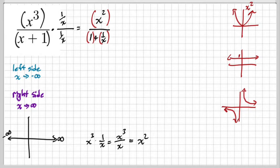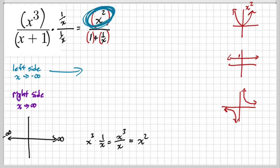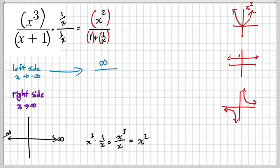Now that you know what the left and right sides are approaching for each of these, you can make predictions. We're going to plug in negative infinity — that's weird because negative infinity is not a number, it's a concept. Think of 'left side of the graph' when you see negative infinity. So on the left side: x squared approaches positive infinity, the constant approaches 1, and 1 over x approaches zero. So infinity divided by one plus zero gives us infinity — f of x is approaching infinity.